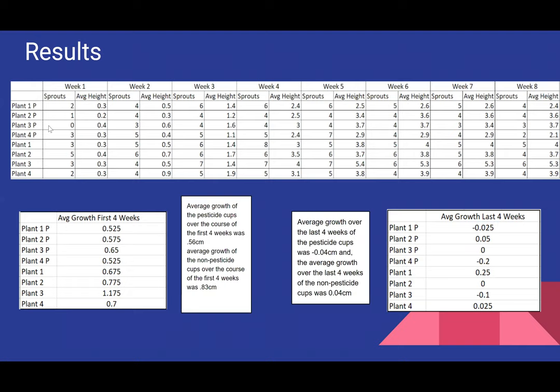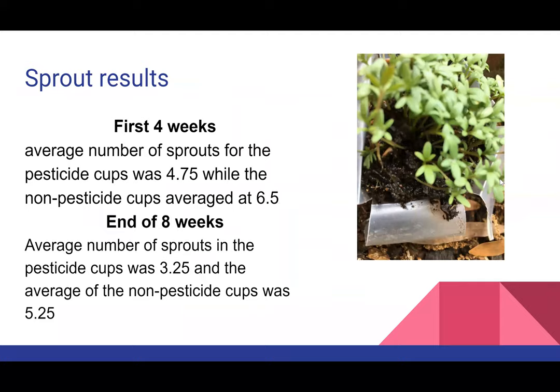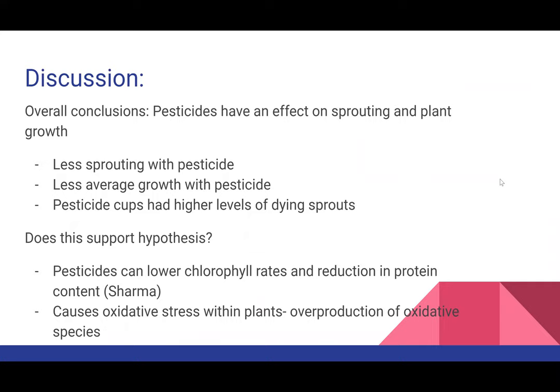Going back to the chart, you can see that among the third pesticide cup, there were four sprouts but then it actually went down to three. And within cup four of the pesticide group, there were four sprouts, then it went down to two by week eight. There were some sprouts that died in the non-pesticide cups as well, but it wasn't as prevalent among those.